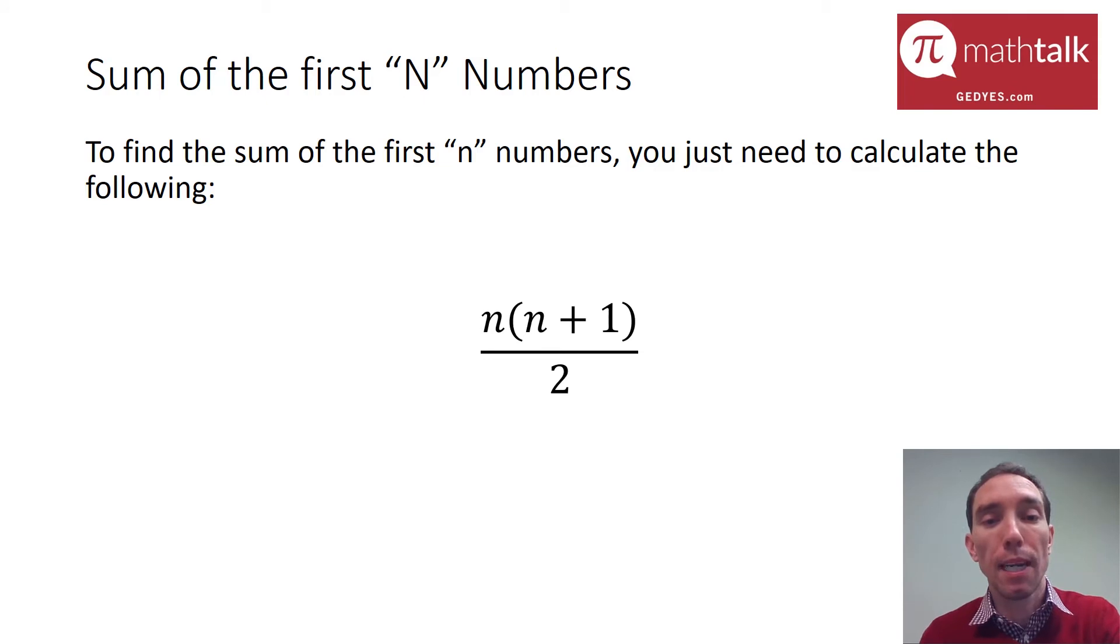Let's look at our last little tip that I want to share with you, and that is adding up the first N numbers. Let's say someone asked you to find the sum of the first 10 digits: 1 plus 2 plus 3 plus 4, 5, 6, 7, 8, 9, 10. Well, there's actually a formula you could use where you don't have to actually add them up one by one. That formula is n times (n + 1) divided by 2.